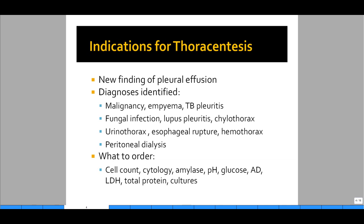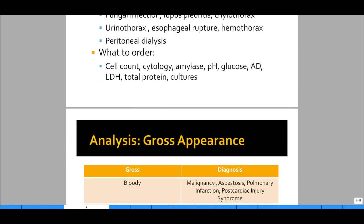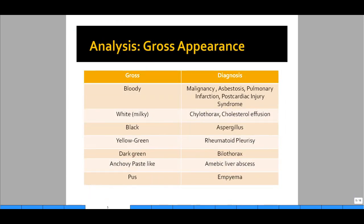Let's talk about how to analyze the basic fluid of a pleural effusion. The first thing you want to look at is the appearance of the fluid itself. If it's bloody, think malignancy, asbestosis, pulmonary infarction, or post-cardiac injury syndrome. A white appearance may indicate chylothorax or cholesterol effusion — very easy to identify. A black color is likely due to aspergillus. Yellow-green can be due to rheumatoid pleurisy. Dark green, bilateral, anchovy paste-like is considered amoebic liver abscess. Pus is likely empyema. Gross appearance is not a definitive diagnosis, but it helps narrow the field of possible diagnoses.